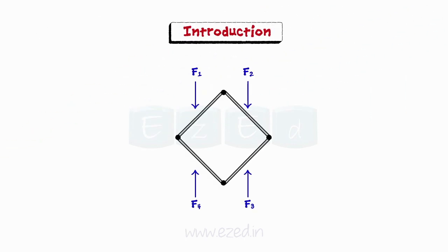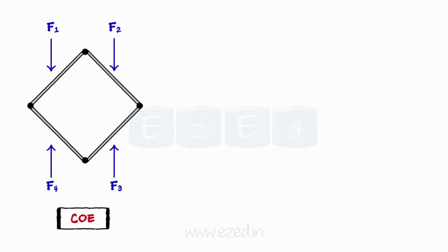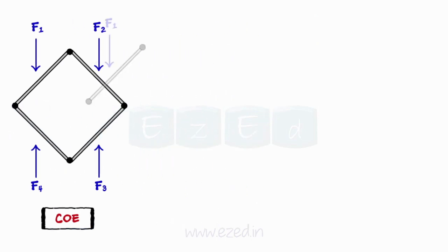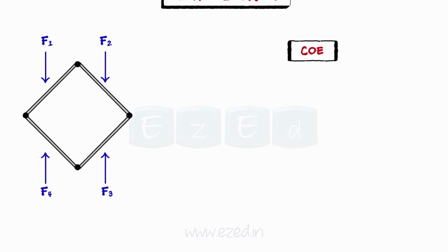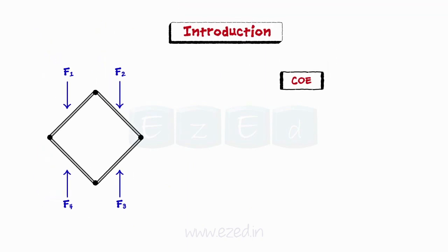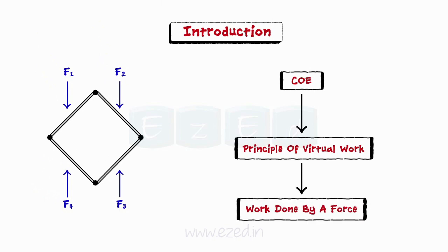Previously, we have analyzed the equilibrium of a rigid body by isolating it with a free body diagram and then applying the various conditions of equilibrium. In this topic, we will learn about another method of expressing the conditions of equilibrium, based on the principle of virtual work. This method is based on the concept of the work done by a force and is more direct.